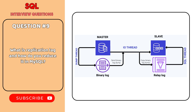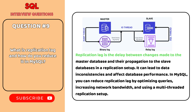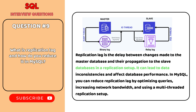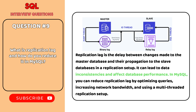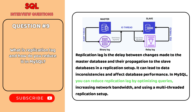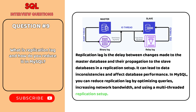What is replication lag, and how do you reduce it in MySQL? Replication lag is the delay between changes made to the master database and their propagation to the slave databases in a replication setup. It can lead to data inconsistencies and affect database performance. In MySQL, you can reduce replication lag by optimising queries, increasing network bandwidth, and using a multi-threaded replication setup.